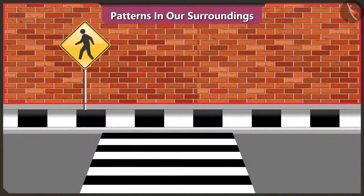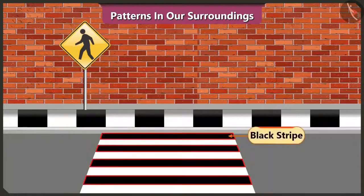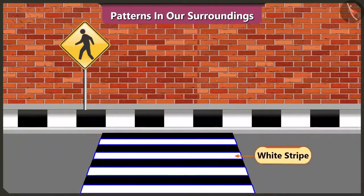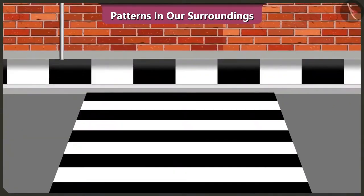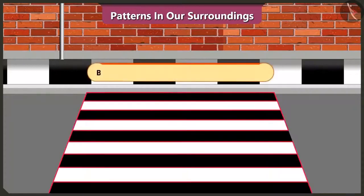Vinny, look at this wall. This wall has a pattern made of bricks. Oh yes. Now look — this zebra crossing has a pattern of black and white stripes. Yes, this pattern has black, white, black, white lines — both black and white color lines have been used repeatedly.